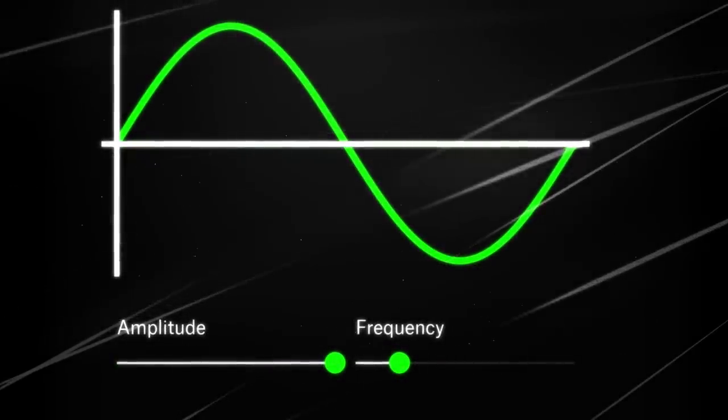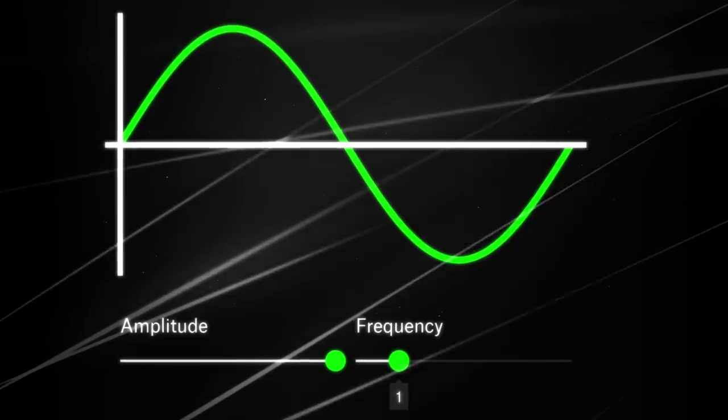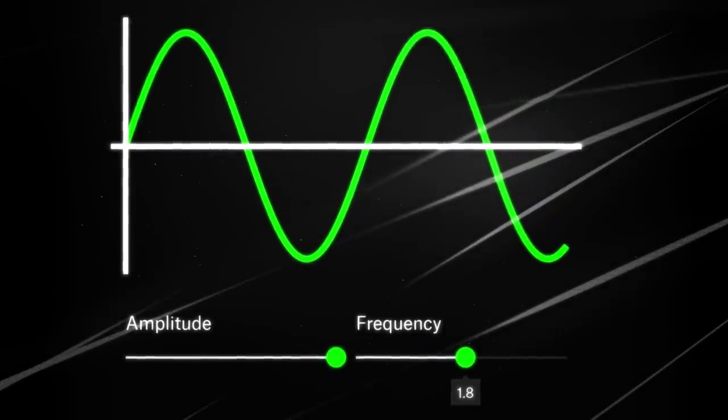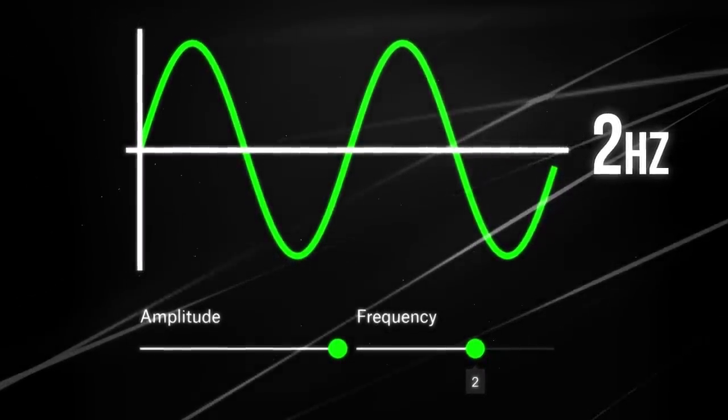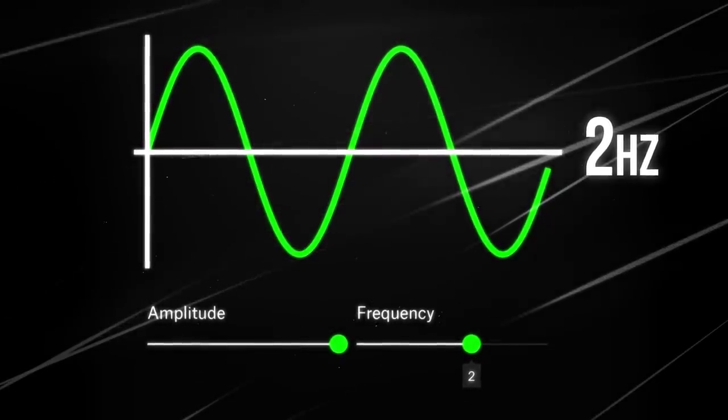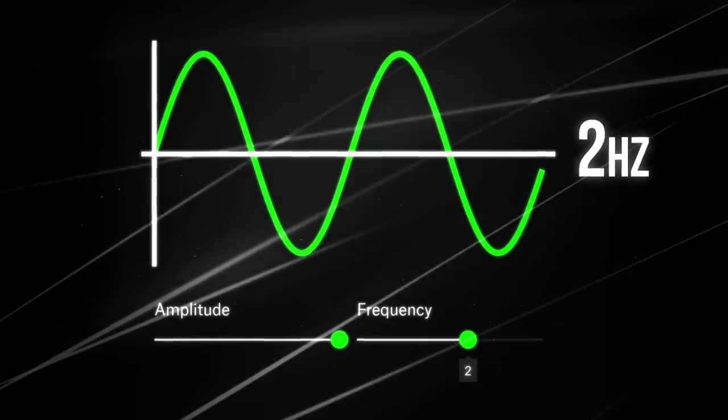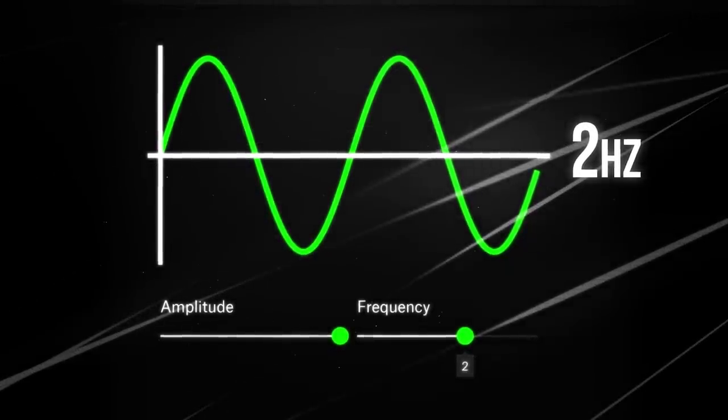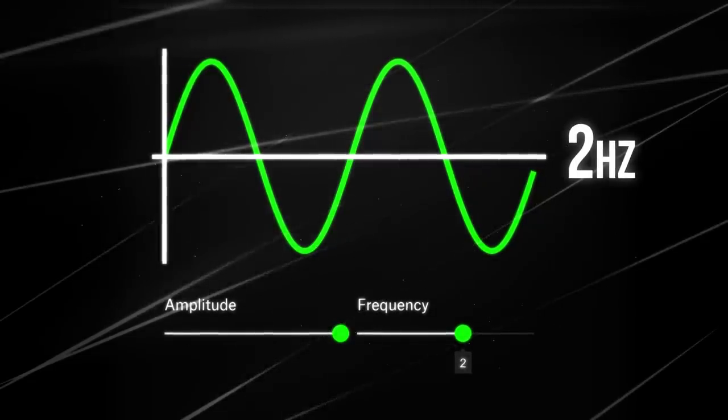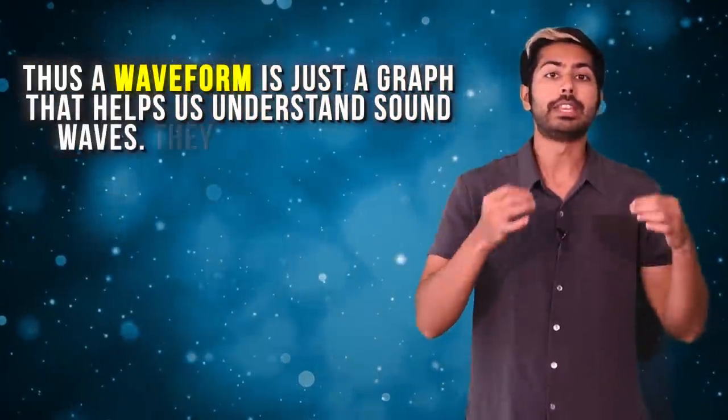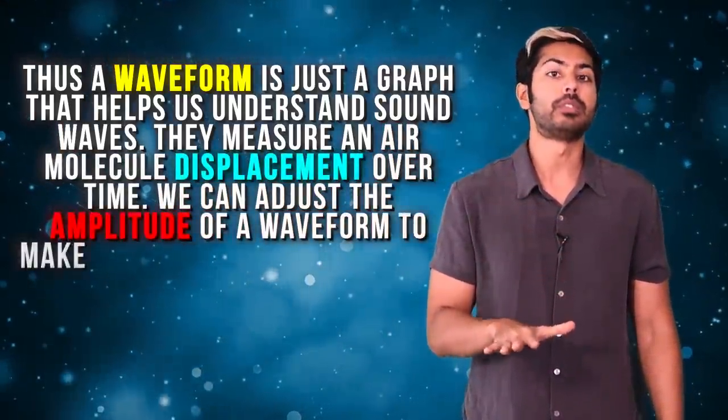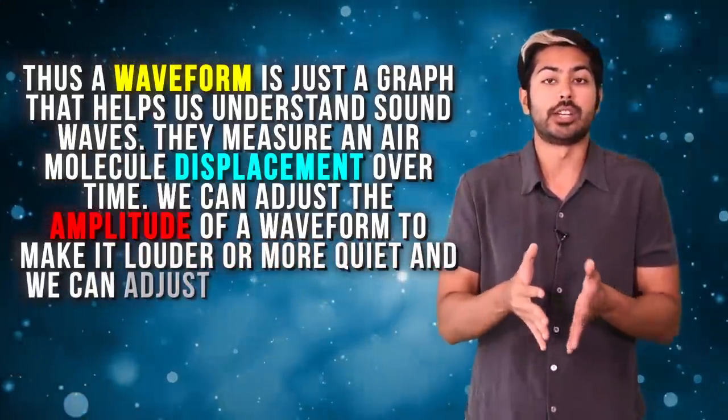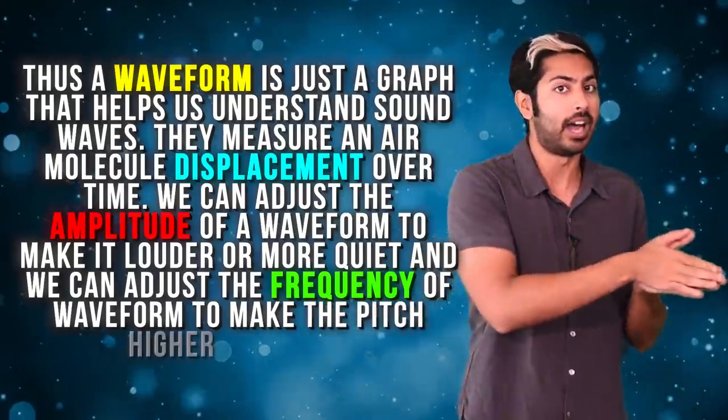And if we updated the waveform so that it repeats twice in the available time, it would be twice as fast. Frequency is a measure of how many times the waveform repeats in a given amount of time. This is measured in hertz, which represents the number of repetitions per second. This waveform graph shows a one-second interval, so we can deduce that this wave is oscillating at two hertz. The faster a wave repeats itself, the higher the pitch of the note. Thus, a waveform is just a graph that helps us understand sound waves. They measure the air molecule's displacement over time. We can adjust the amplitude of a waveform to make it louder or more quiet, and we can adjust the frequency of a waveform to make the pitch higher or lower.